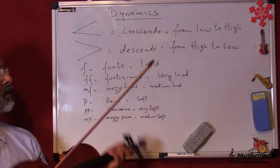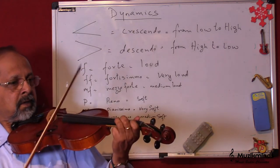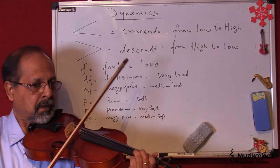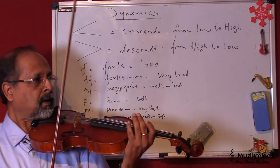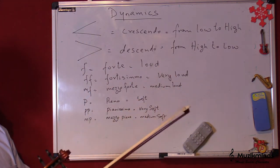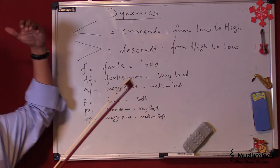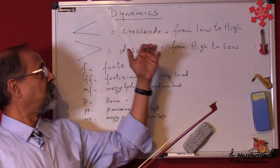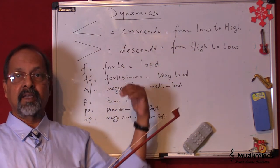Now, we play the descendo, which is from high to low. Okay, so that was the descendo. So, now you would understand the difference between crescendo and descendo.